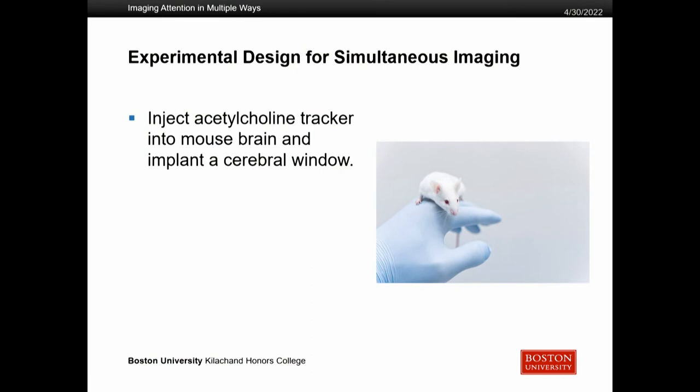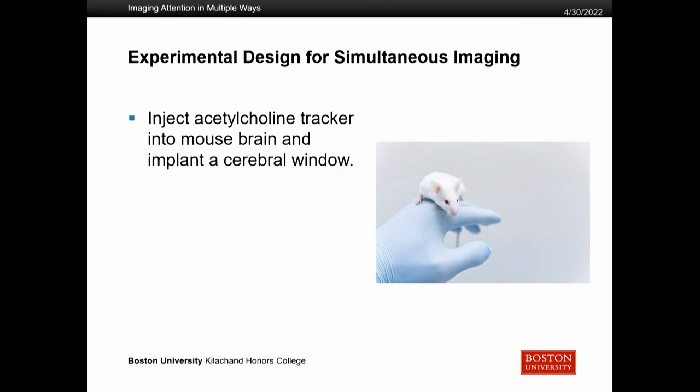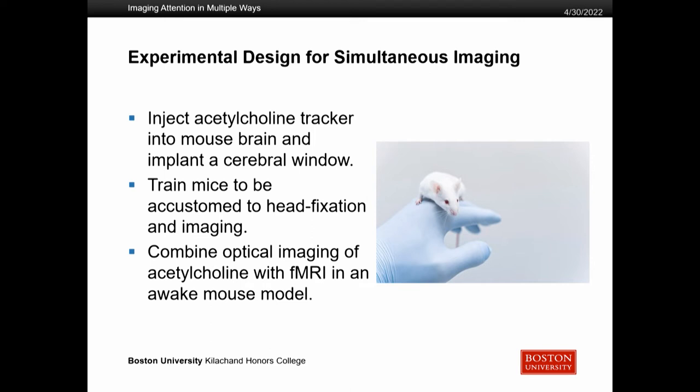For my project, what we were trying to do is set up an imaging technique where we can use fMRI in a mouse model and relate that to what we see in acetylcholine, then hopefully get information we can relate to humans. We injected an acetylcholine tracker into the brain of a mouse and implanted a cerebral window so we could image this acetylcholine. We trained the mice to be accustomed to being head-fixed and to going through these imaging sessions, because attention is a very salient process and we need to be sure we're imaging just attention. We then combined this optical imaging of acetylcholine with fMRI in an awake mouse model.